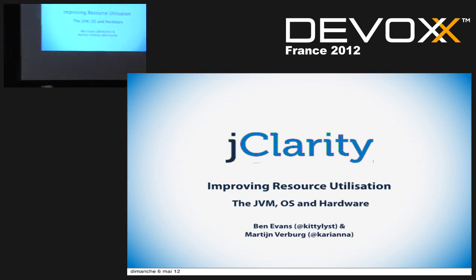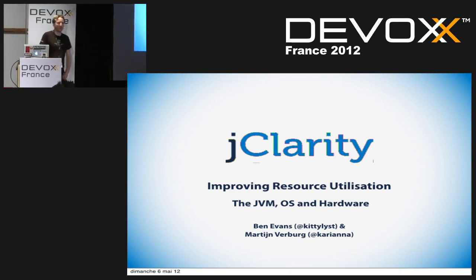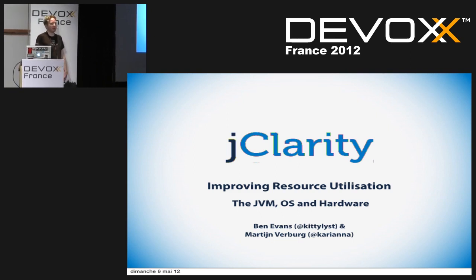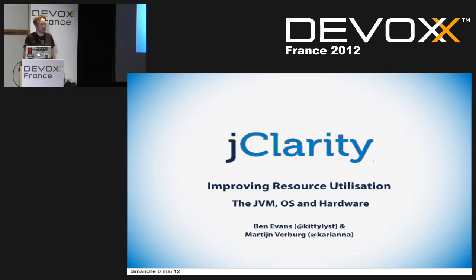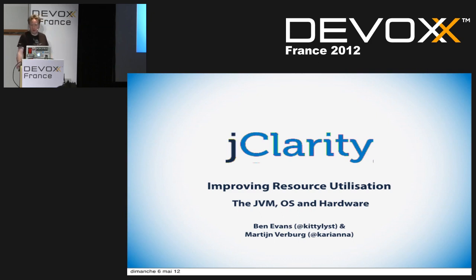So this talk is called Improving Resource Utilization. What it's really about is thinking about how, as Java programmers and in the Java environment, we can get better utilization and better consumption of resources. Because the computers we have today are extremely powerful machines, and there's a nagging doubt that many of us have that we're really not getting the most out of them. We're going to talk about some of the reasons why that is and what we can do to help.